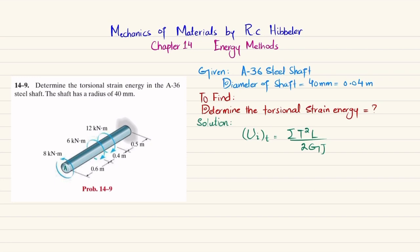Let the points be labeled A, B, C, and D. We will find the torque in section AB first. If we cut the shaft at this section and draw the free body diagram, we get the diagram for section AB.